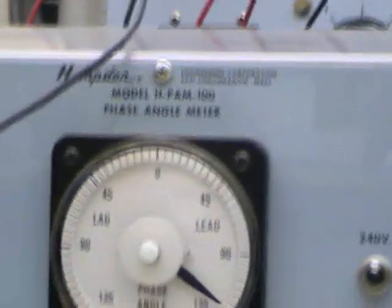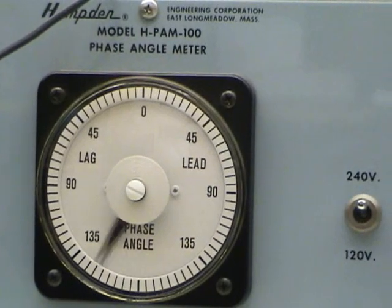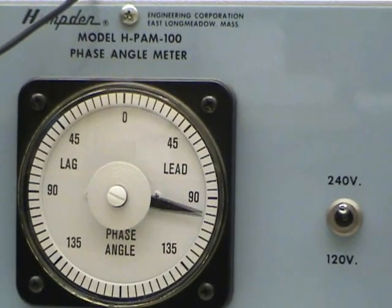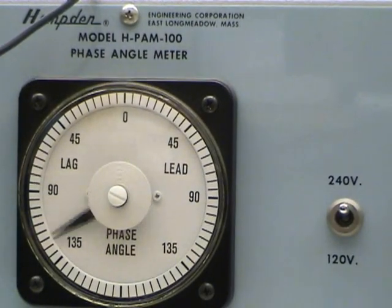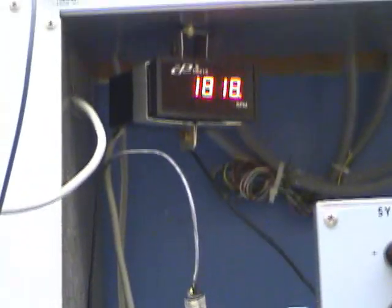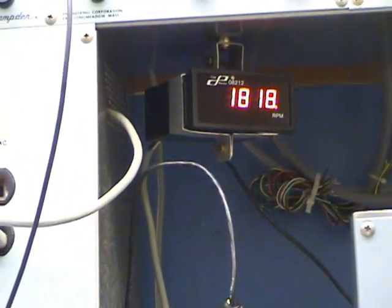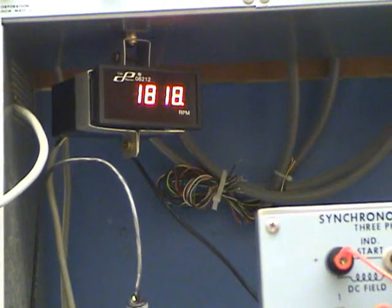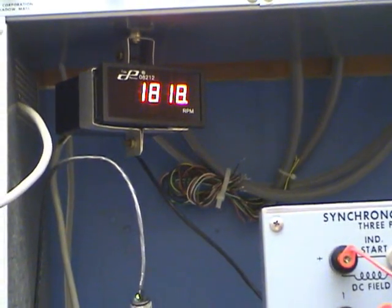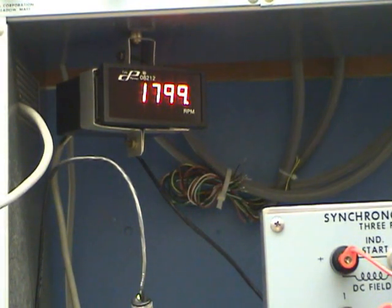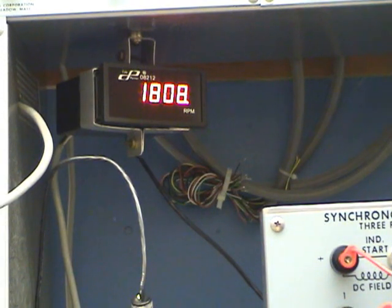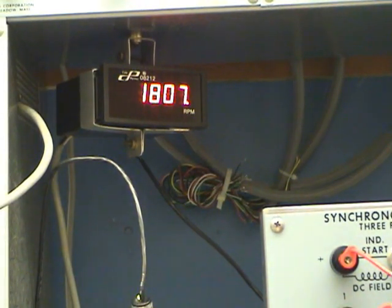Looking at our phase angle meter, we can see that the phase angle meter is continually revolving, indicating a difference in speed. It is also rotating toward the machine, and so that indicates the machine is running a little high, and that is in fact the case here. If we look at our tachometer, we're at about 1818 RPM. So I'll try to bring that speed down just a little bit. A little bit above 1800 RPM.